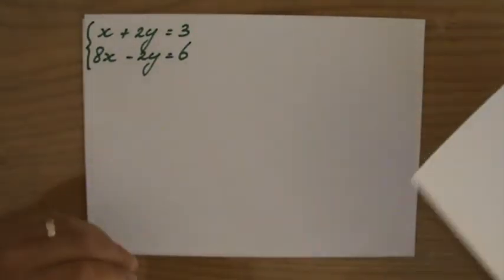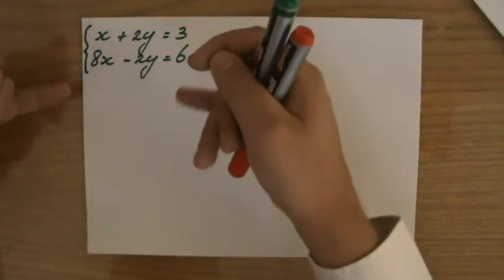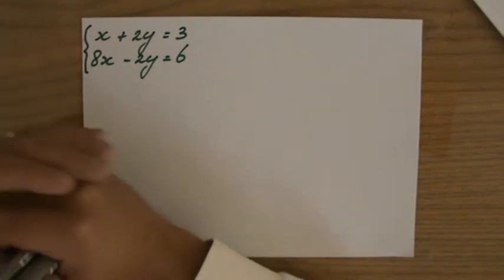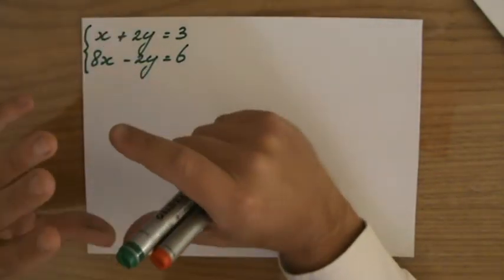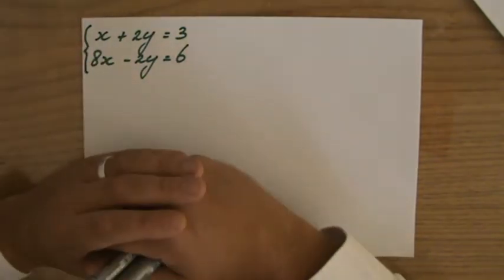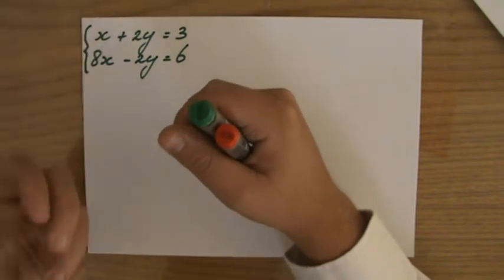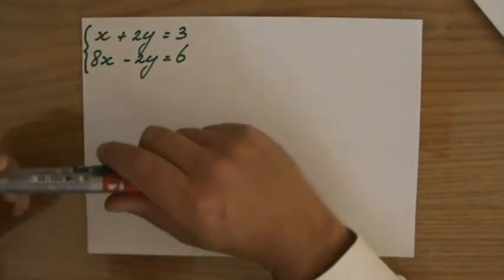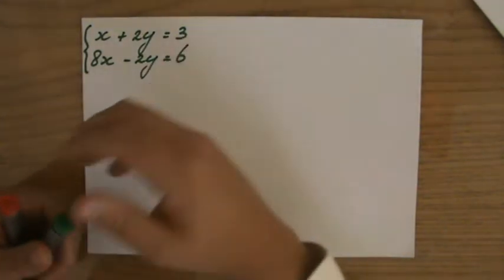Anyway, substitution method, that's what we have to do. We have to find out what is the value of x and what is the value of y, so that both equations are true. Substitution already says that you take something out and you put something for its place back into it. Like football, you substitute a player - you take a player out and you put another player back in.